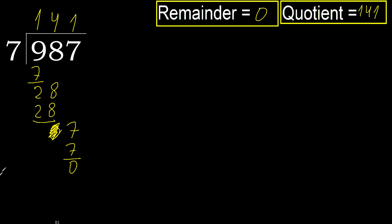Therefore, 987 divided by 7 is complete — the answer is here.